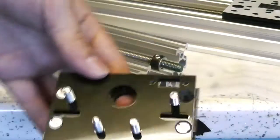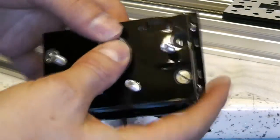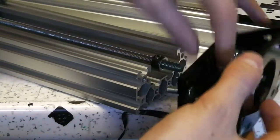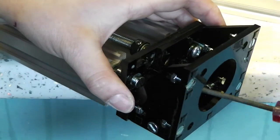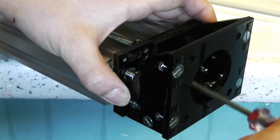Now I'm going to fit in the 688ZZ bearing. It should just clip into place if the tolerance of the part is good enough. And then I'm going to screw the whole piece onto the C-beam.